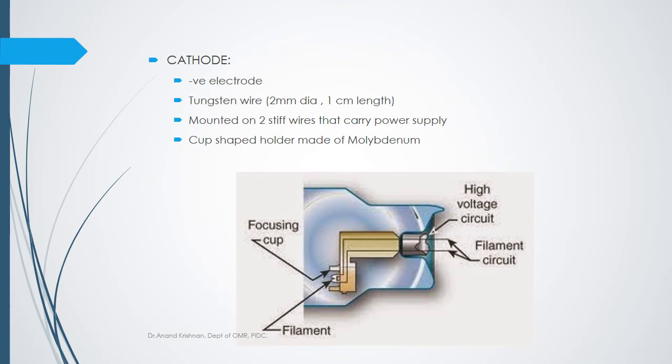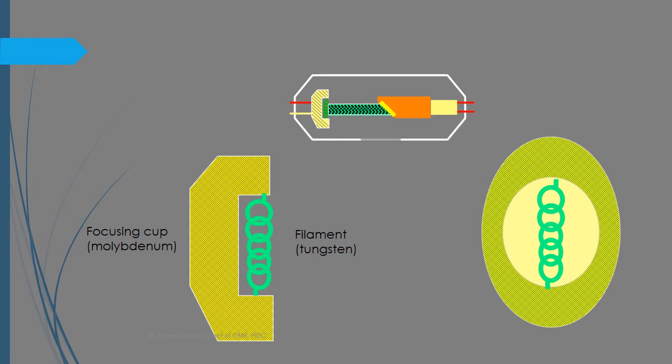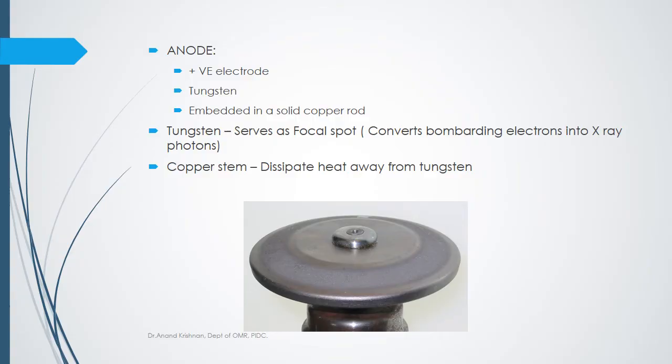The cathode is negatively charged and made of a tungsten wire approximately two millimeters in diameter and one centimeter in length, mounted on two stiff wires that carry the power supply. It is mounted in a cup-shaped holder made of molybdenum. A cross-sectional view shows how the cathode is positioned within the molybdenum cup.